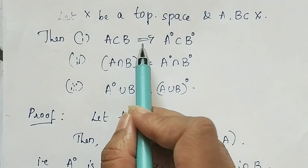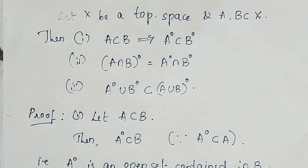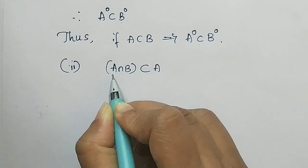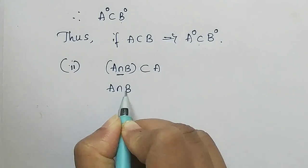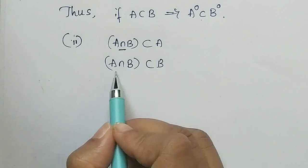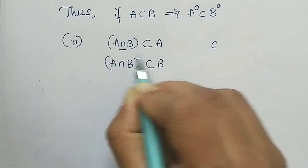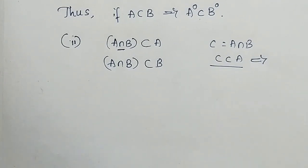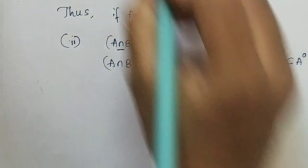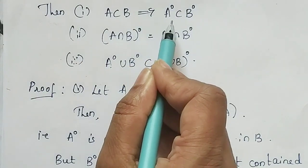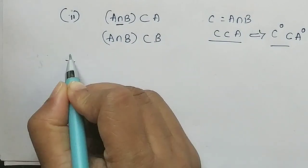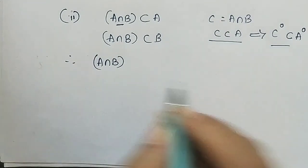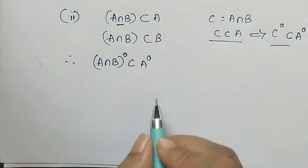This proves the first result. For the second result: A intersection B is always a subset of A, and similarly A intersection B is a subset of B. If we consider A intersection B as some set C, then C is a subset of A, which by the first result implies C interior is a subset of A interior. Substituting back, A intersection B interior is a subset of A interior. Similarly, A intersection B interior is a subset of B interior.